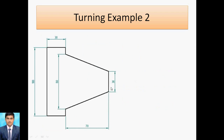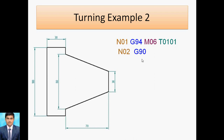Now we move to example two, which has a taper shape. Initial diameter is 30 and final diameter is 100; the taper starts at diameter 30 and targets diameter 80. First block: N01 G94 absolute positioning, M06 tool change, T0101. Second block: G90 for absolute programming. Third block N03: G00 rapid traverse, X0 Z0, S600 spindle speed at 600 RPM.